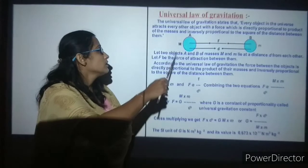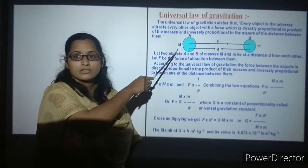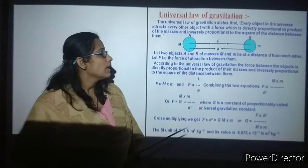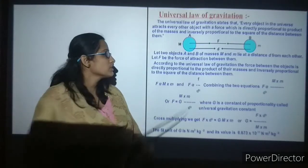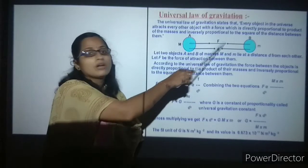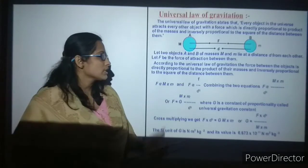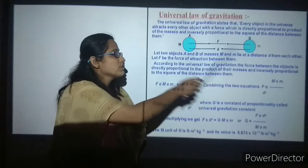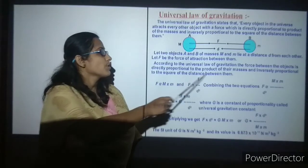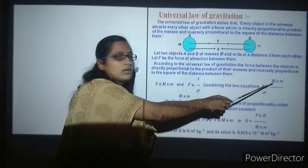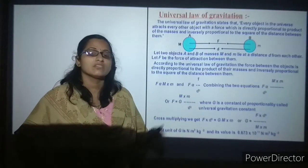Let's take an example of two objects A and B having mass. The mass of the first object is capital M, mass of the second object is small m, and they are lying at a distance D from each other. The force here is a force of attraction — you can see the arrow marks pointing towards each other. According to the law of gravitation, the force is directly proportional to the product of their masses and inversely proportional to D squared.